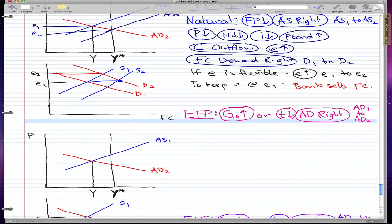Now EFP, expansionary fiscal policy. We know that government either increases their spending or taxes go down. AD moves right from AD1 to AD2. So AD moves right from AD1 to AD2.